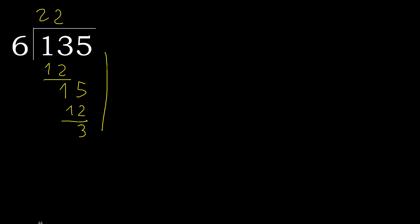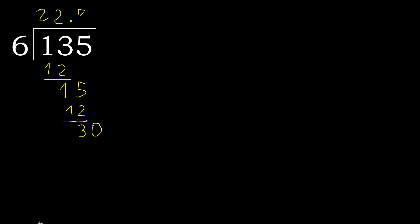Next: there is no more number, therefore we complete with a decimal point. Bring down a 0: 30. 6 multiplied by 5 is 30. 30 is not greater, ok. Subtract: remainder is 0.